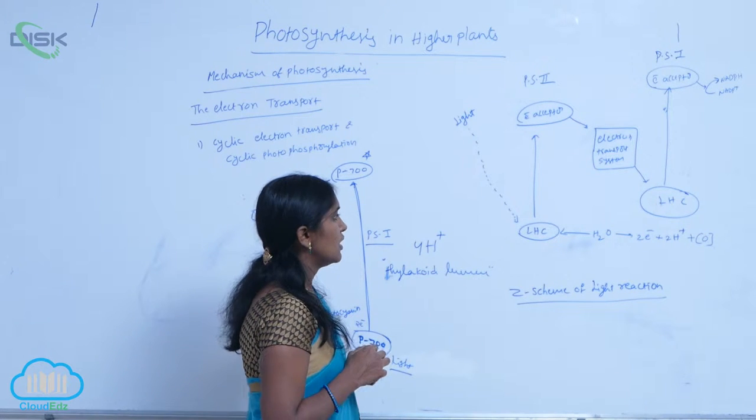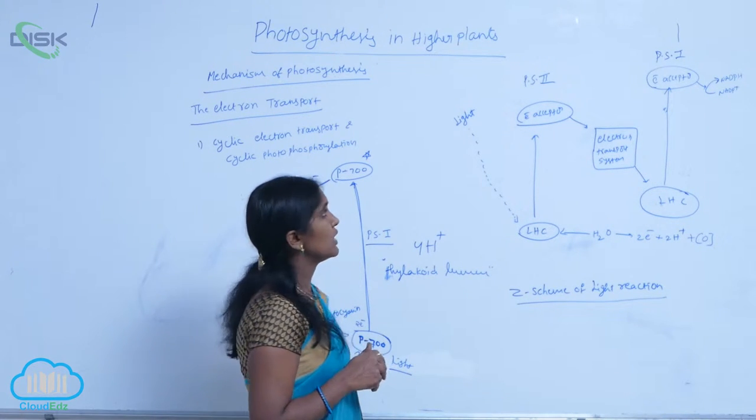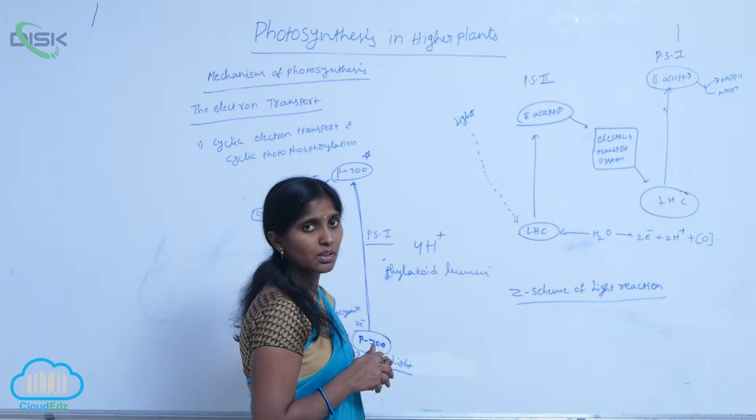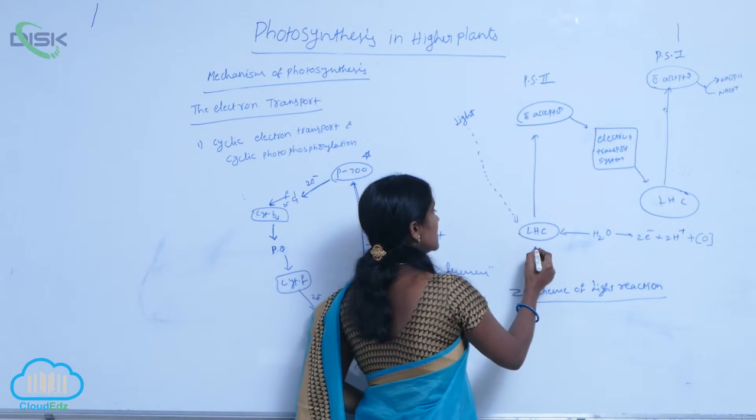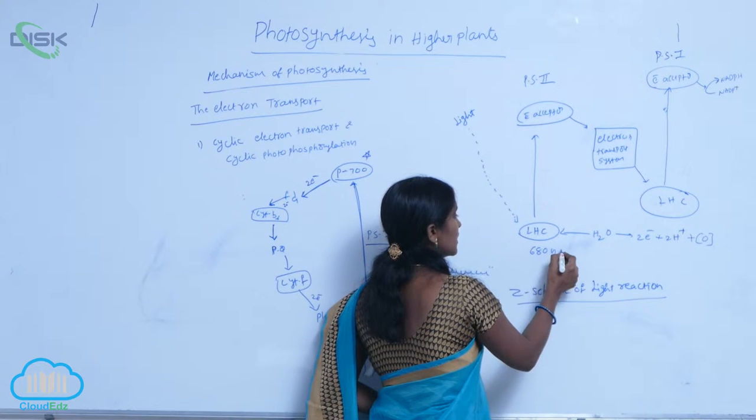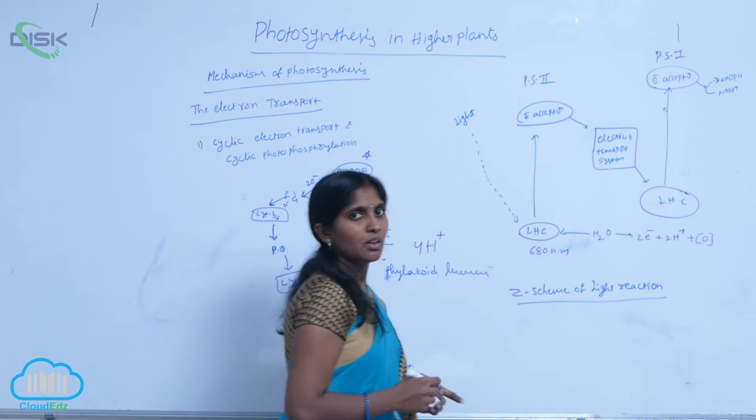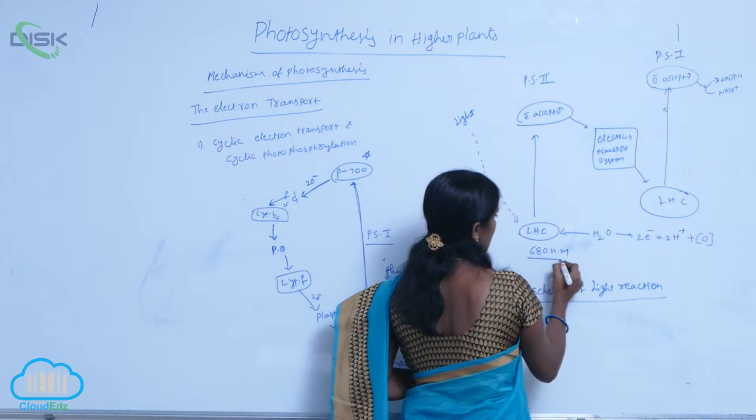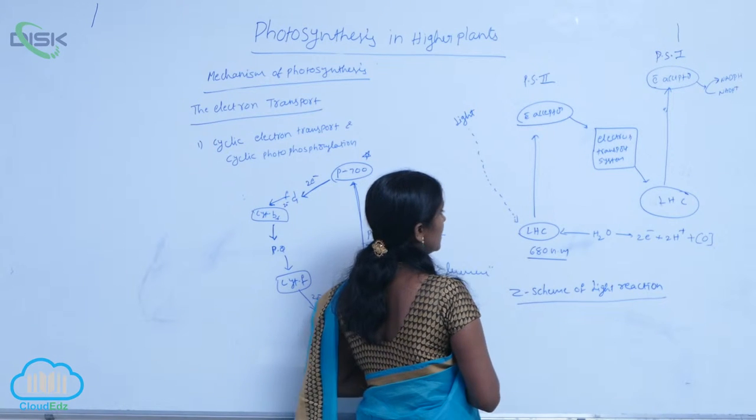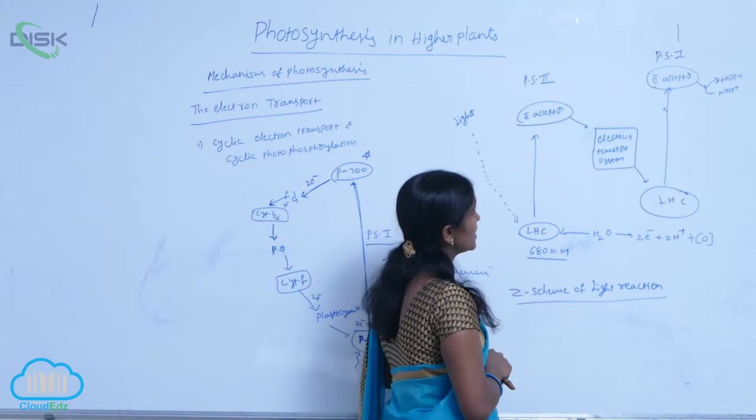First, the light harvesting complex of PS2 gets excited by absorbing 680 nanometers wavelength of light. After absorption, photosystem 2 becomes excited.